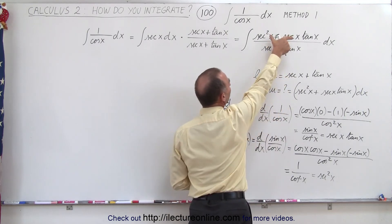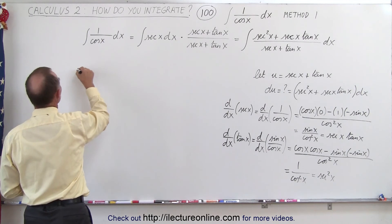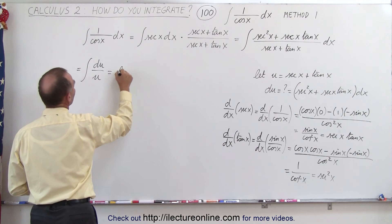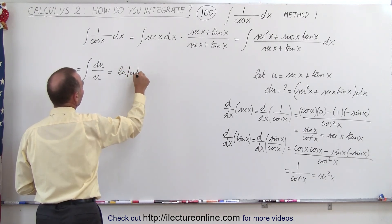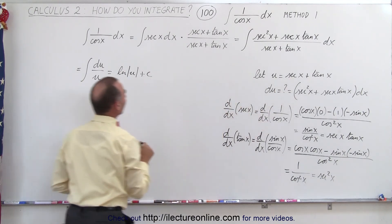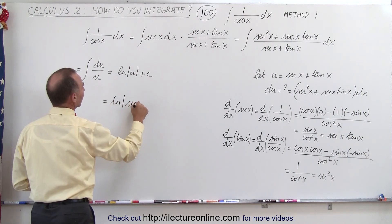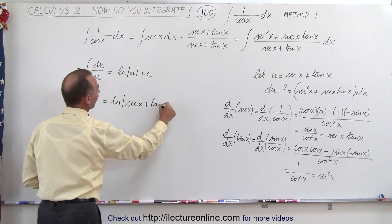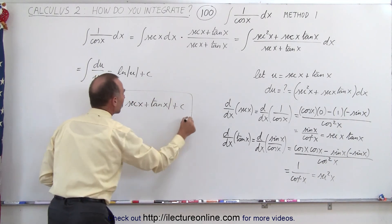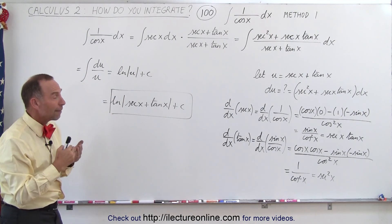That means we have du in the numerator and u in the denominator. So this is equal to the integral of du over u, which of course equals the natural log of u plus a constant of integration. Since u was defined as the secant of x plus the tangent of x, this is equal to the natural log of the secant of x plus the tangent of x, plus a constant of integration. That is the integral of 1 over the cosine of x using method 1.